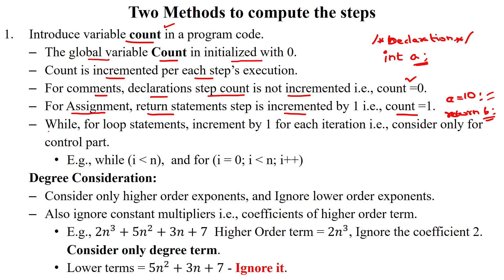For looping statements and conditional statements, we will increment by one for each iteration. That is, it will consider the entire portion as a single operation. So here we will take this entire statement as one count. For a for loop also, we will take this as one count for the count variable, so we will increment by one.